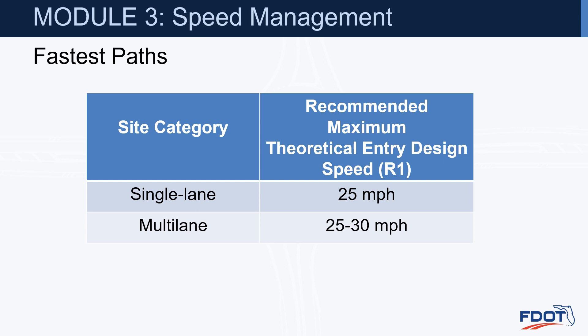The recommended maximum theoretical entry design speed for single lanes is 25 miles per hour and 30 for multi-lanes. But we do try to get them as slow as possible — if you can get it to 23 or 24 for single lanes, that would be great. It doesn't have to be right at 25.